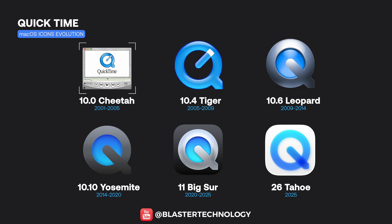The first QuickTime icon was a realistic media player with a window-style interface, later adopting the glossy aqua-style Q symbol. Over time, it was gradually stylized, and today it looks more modern and cleaner.